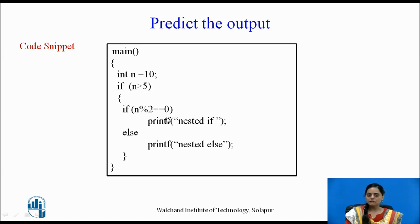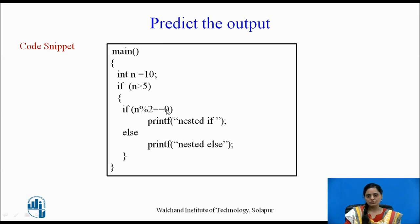After entering the first if block, test2 is evaluated using the modulus operator, which checks the remainder. So 10 modulus 2 equals 0. Therefore both conditions — the first if and the second if — are evaluated to true. Hence this printf statement will be executed, and the answer printed on screen is 'nested if'.